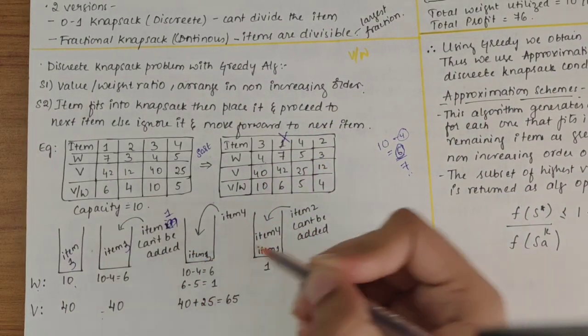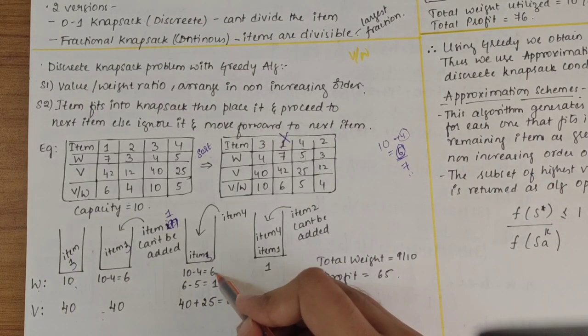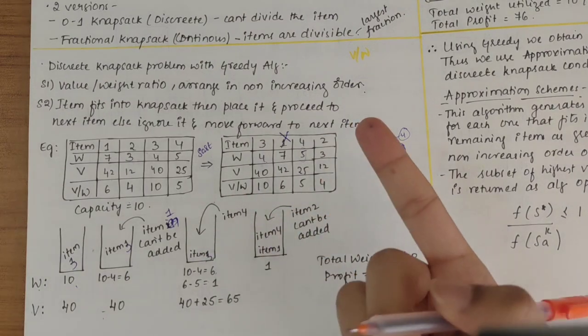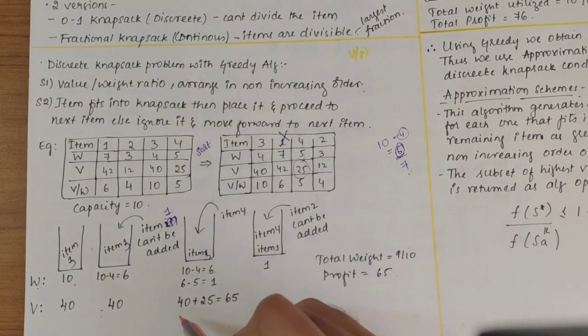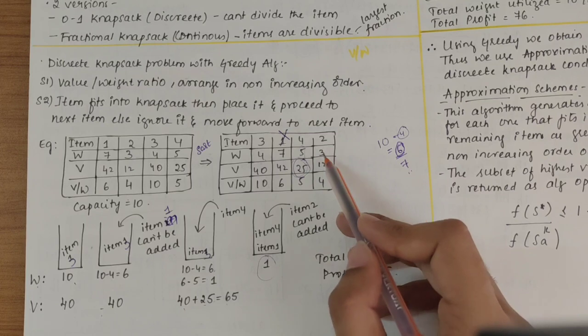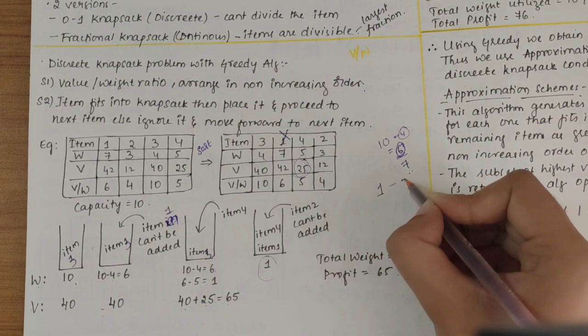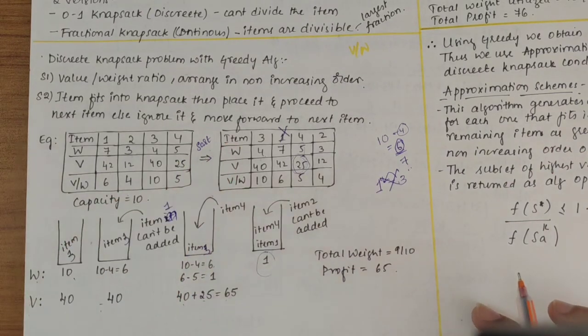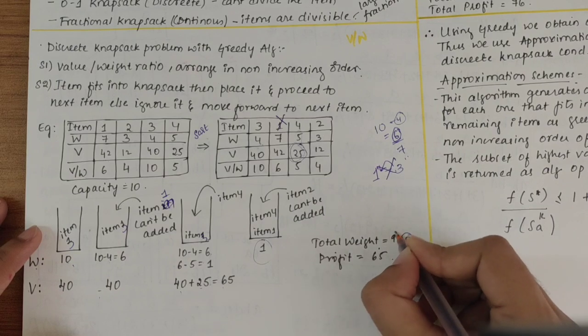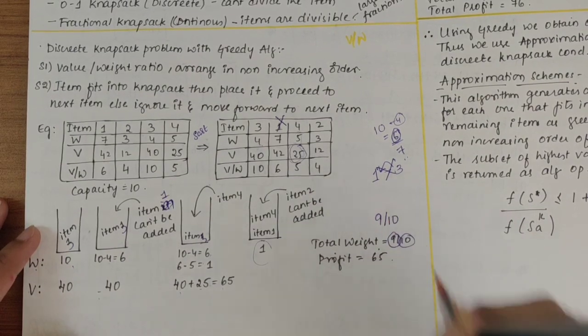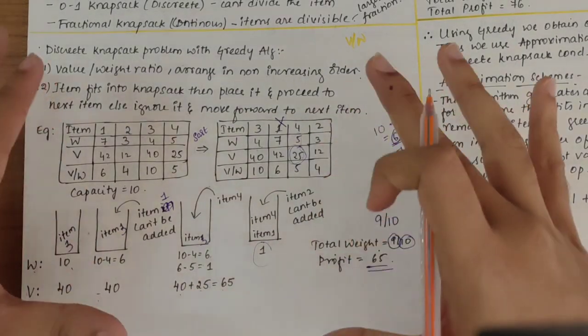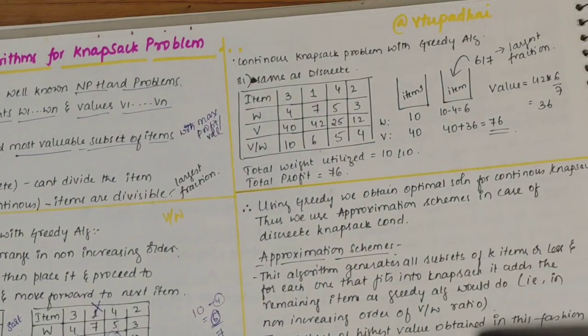Next, moving on to item 4. Item 4 has weight of 5. Here available space is 6, so I can store 5 there. When item 4 is added, its profit also should be added. 25 plus 40, I get 65 here. Next, capacity for sack is 1. Item 2 has weight as 3. Capacity is 1 and weight is 3, can I store it? It is not possible. This is where we reach the end. Total weight out of 10, I was able to fill 9 by 10 weight, and the maximum profit which we obtained is 40 plus 25, that is 65.